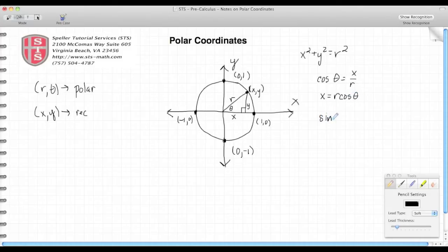Now let's take a look at sine of theta. Sine theta is a relationship of the opposite side over the hypotenuse, so that would be y over r. And if I wanted to express that in terms of y, again I cross multiply, and I come up with y is equal to r sine theta.